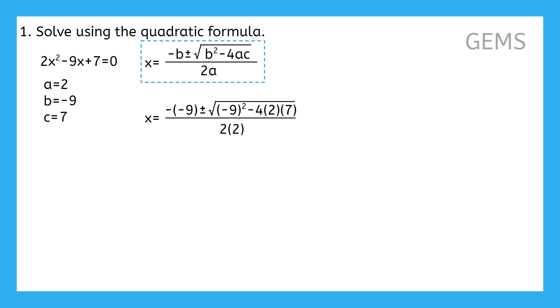Now, we simplify following the order of operations. GEMS tells us to start with groupings. Are there any groupings here? Since this equation has a fraction bar in the middle, both the numerator and denominator are their own groupings, and they each need to be simplified before we can move on from this first step of GEMS. You can start with whichever you prefer, but since the denominator looks a lot less complicated, I'm going to start there. In the denominator, we have 2 times 2, which simplifies to 4.